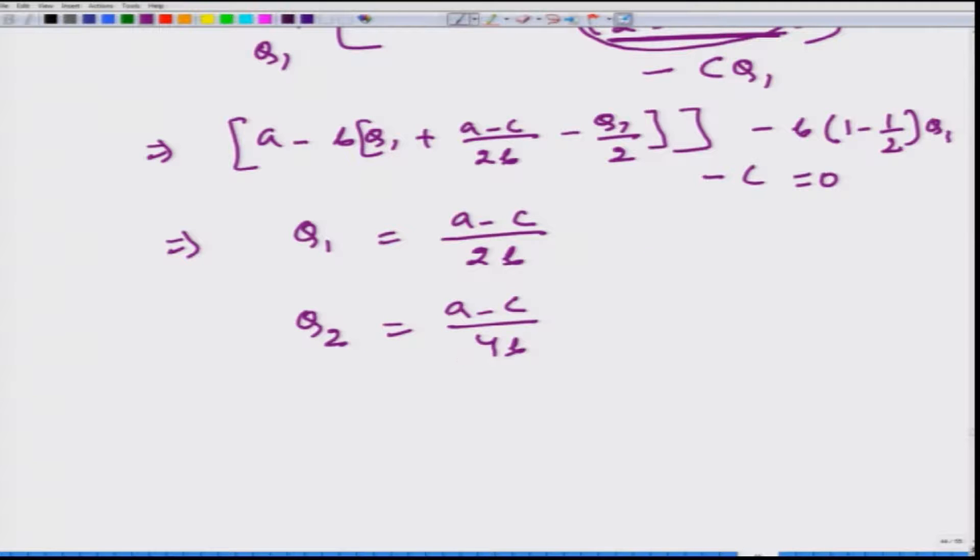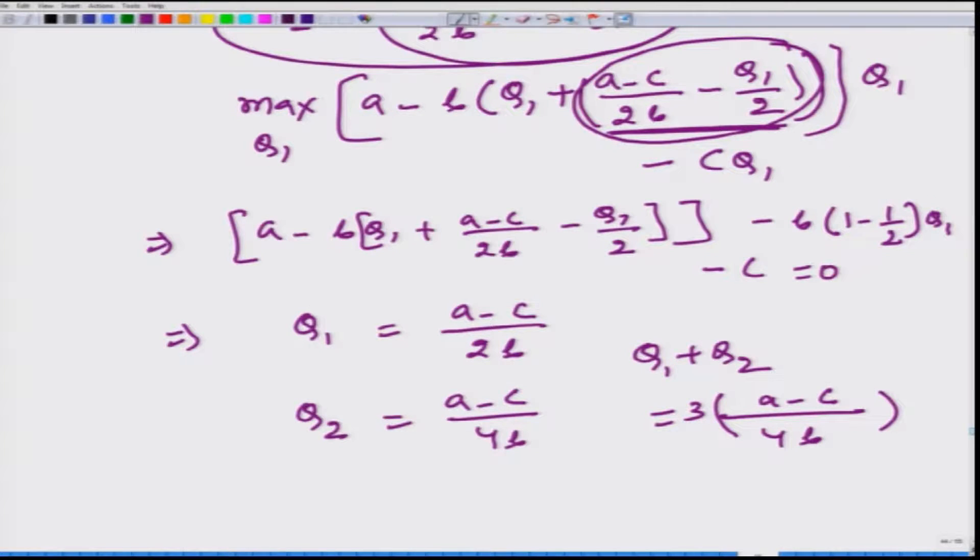So how much is going to be Q1 plus Q2? It is going to be equal to 3/4B multiplied by (A minus C). So what happens to the total level of production? The total level of production is more than the Cournot.